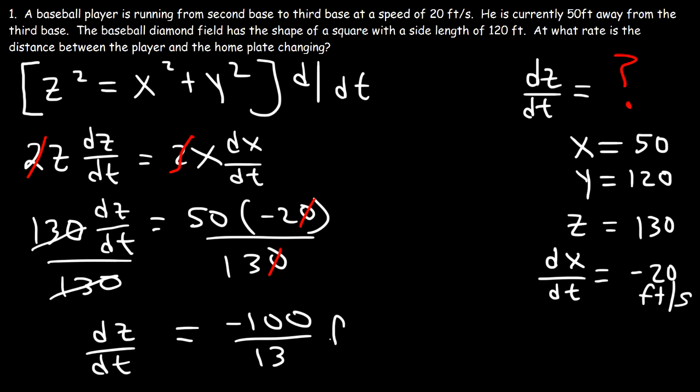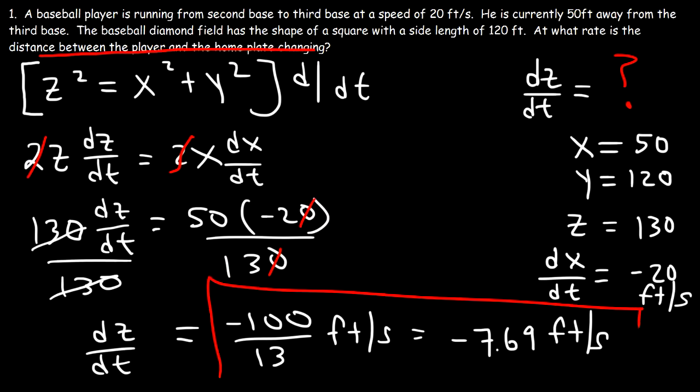So this is the answer. It's negative 100 over 13 feet per second. And let's convert that to a decimal. So that's about negative 7.69 feet per second. So that's the rate at which the distance between the player and the home plate is changing. This is the final answer.